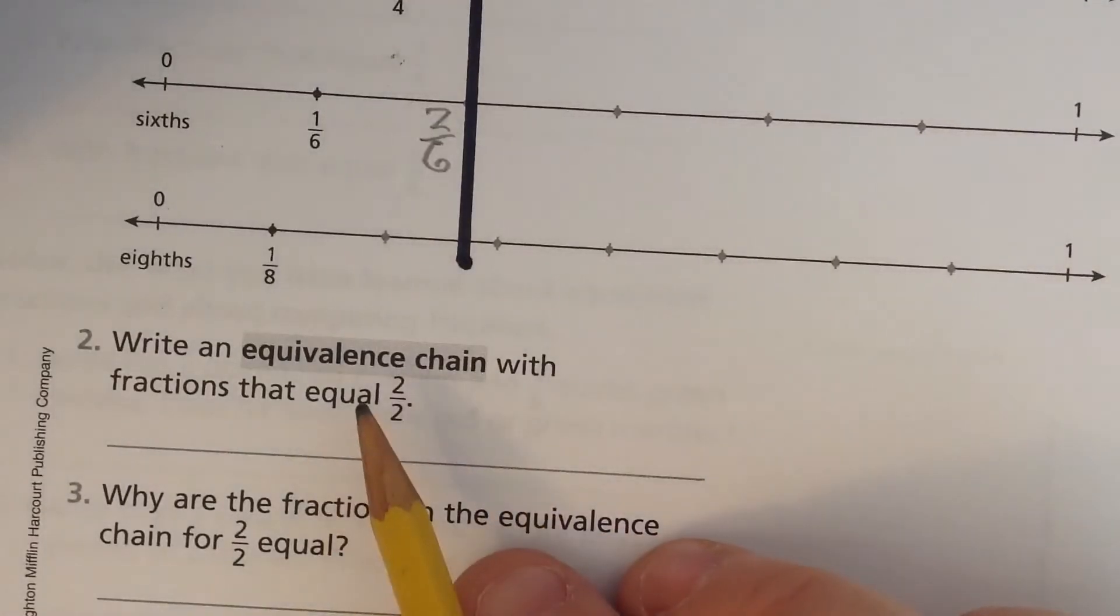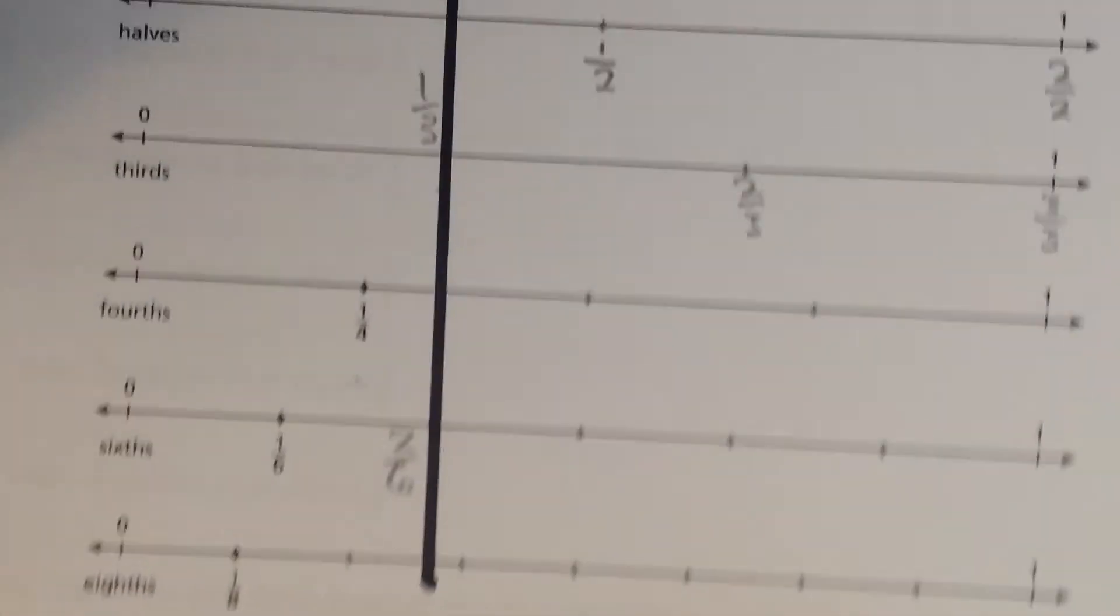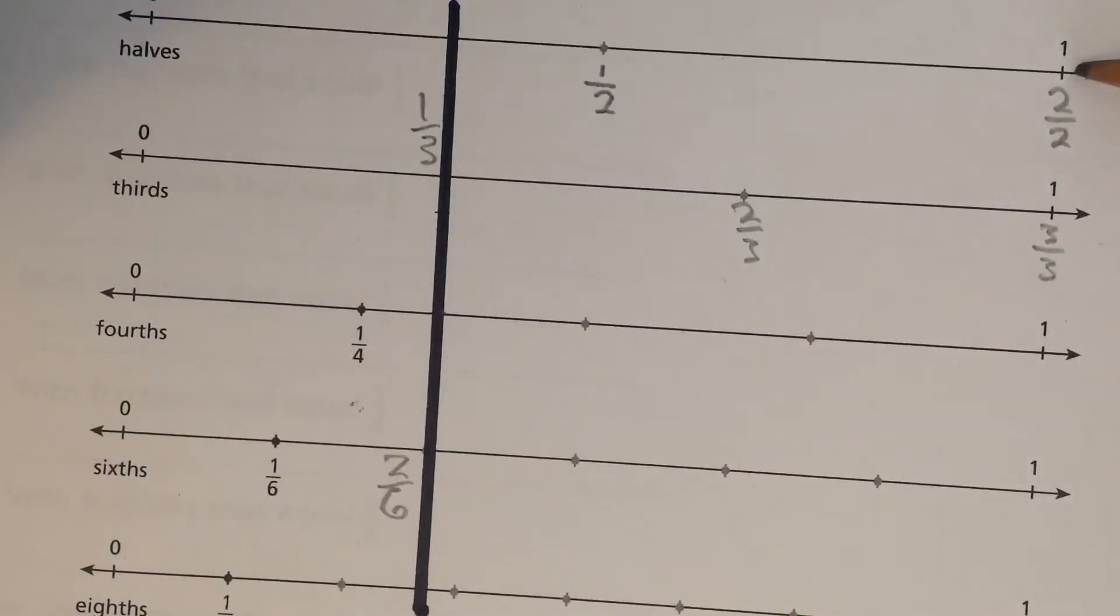Then it says, write an equivalence chain with fractions that equal two-halves. What are the other fractions that are equal to two-halves?